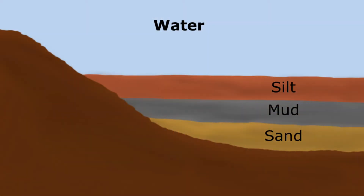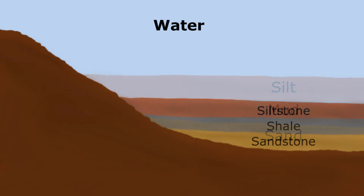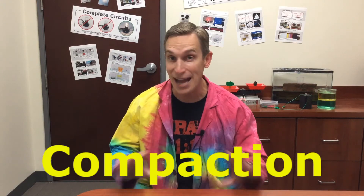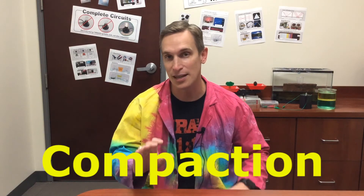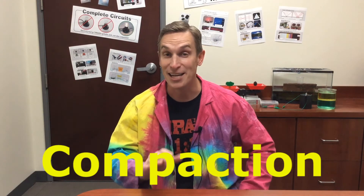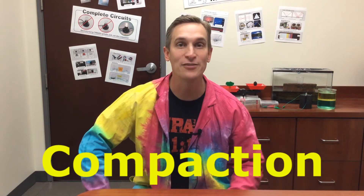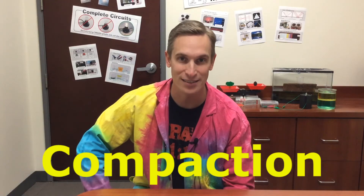In my model, each sponge represents a layer of sediment. Over time, these layers are squeezed together as water and the top layers of sediment press down on them. We call this process the compaction of sediments, and it directly leads to the formation of sedimentary rocks.